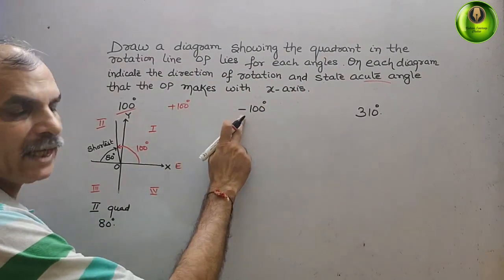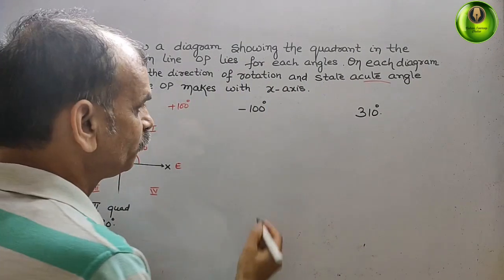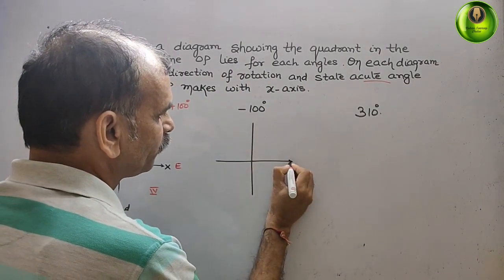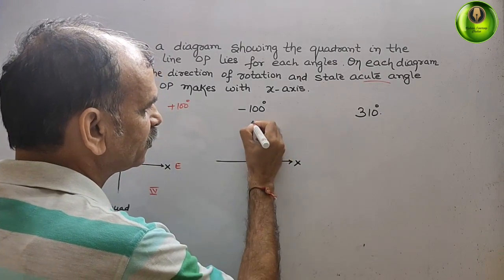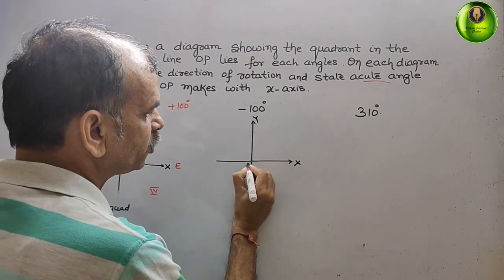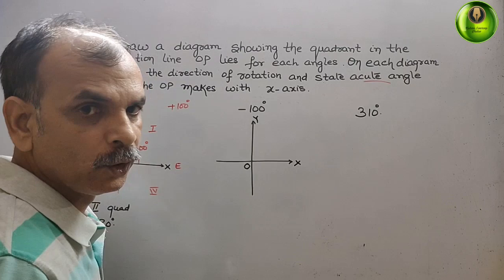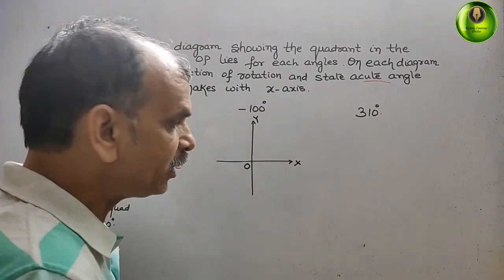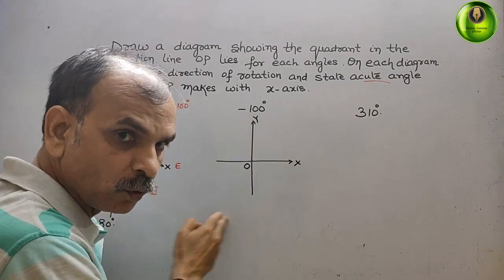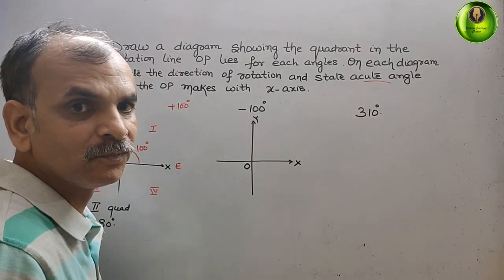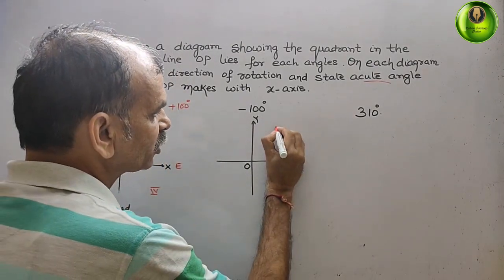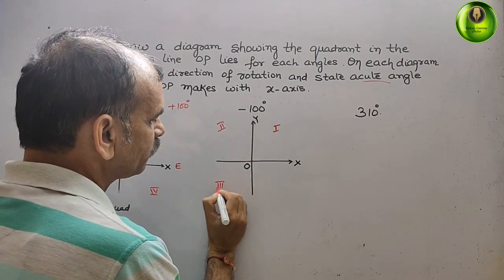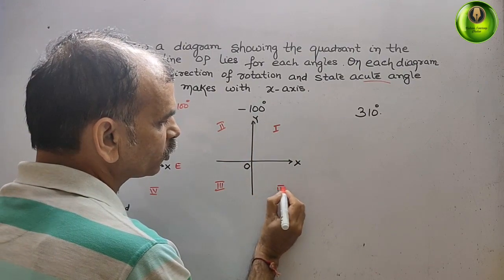Next, they have given minus 100 degrees — negative. So again we draw the X-axis, Y-axis, and center O, and mark the four quadrants: first, second, third, and fourth. Negative means we have to move clockwise.